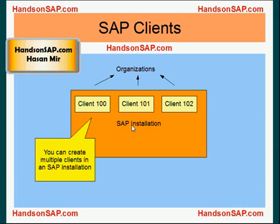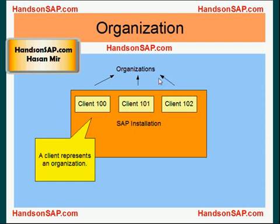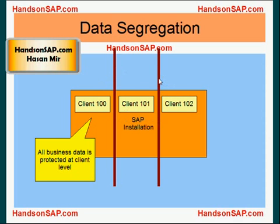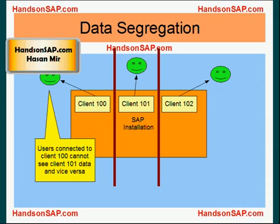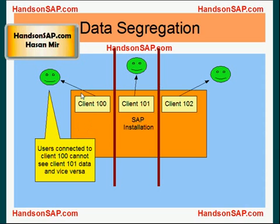A client represents an organization or a company. The main thing here is all business data is protected at the client level. That means users connected to client 100 cannot see client 101's data.